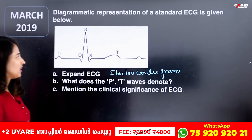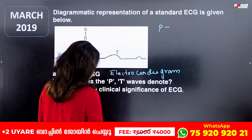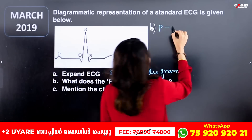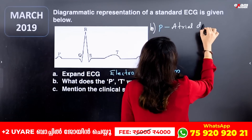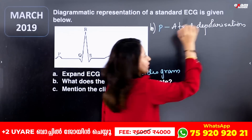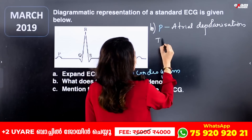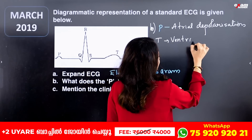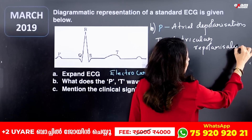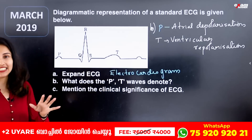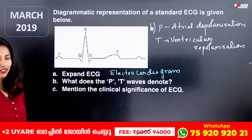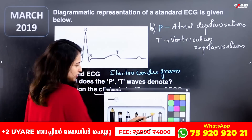What does the P wave and T wave denote? The P wave represents Atrial Depolarization, which leads to Atrial Contraction. The T wave represents Ventricular Repolarization, which means Ventricular Relaxation. The QRS complex represents Ventricular Depolarization, leading to Ventricular Contraction. So we have P, QRS, and T waves in the ECG.